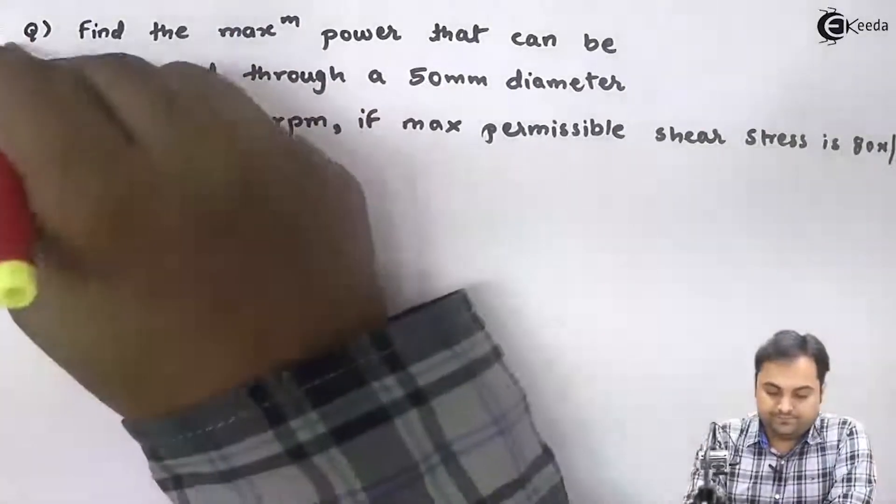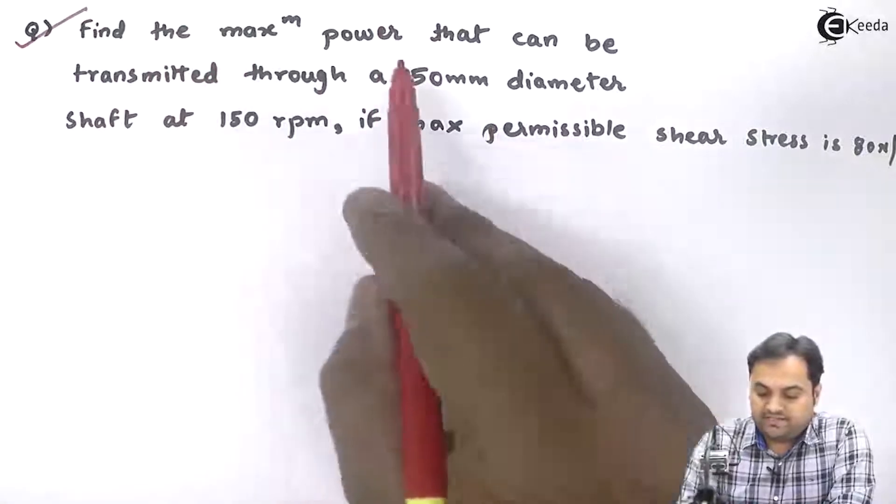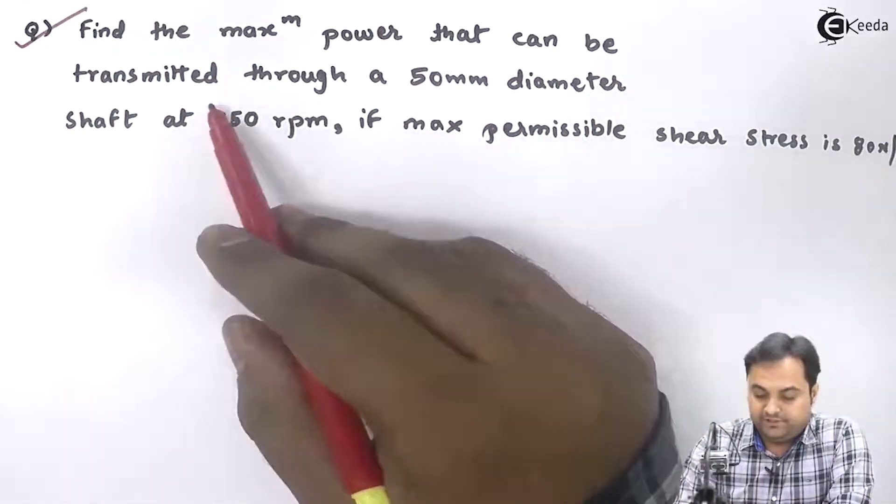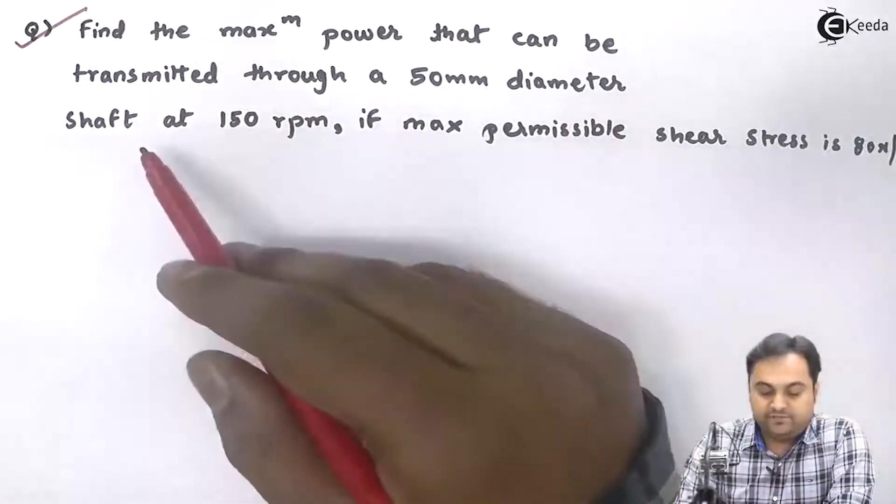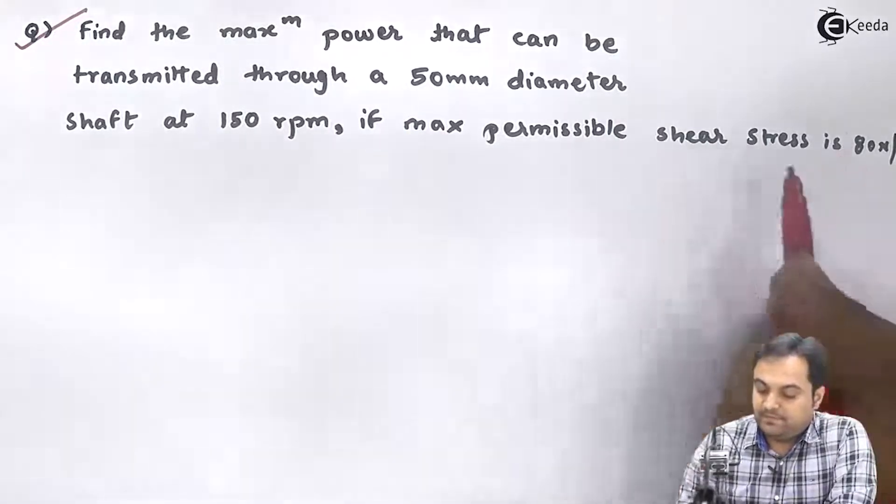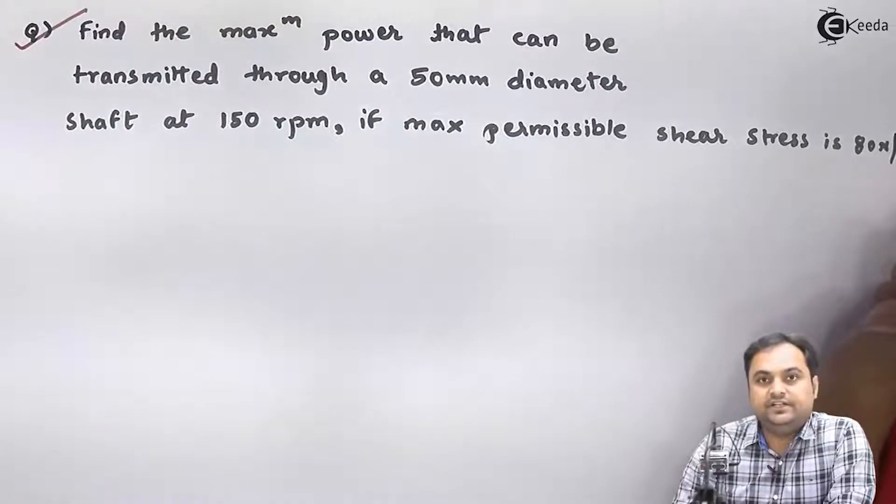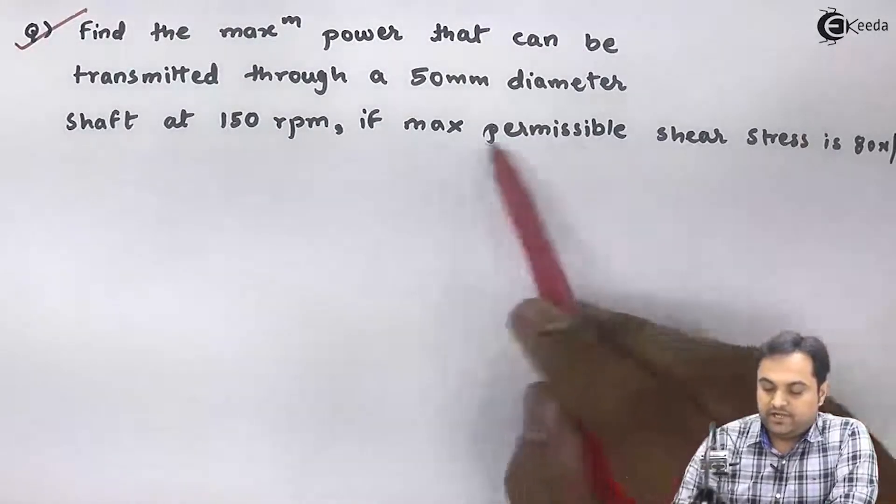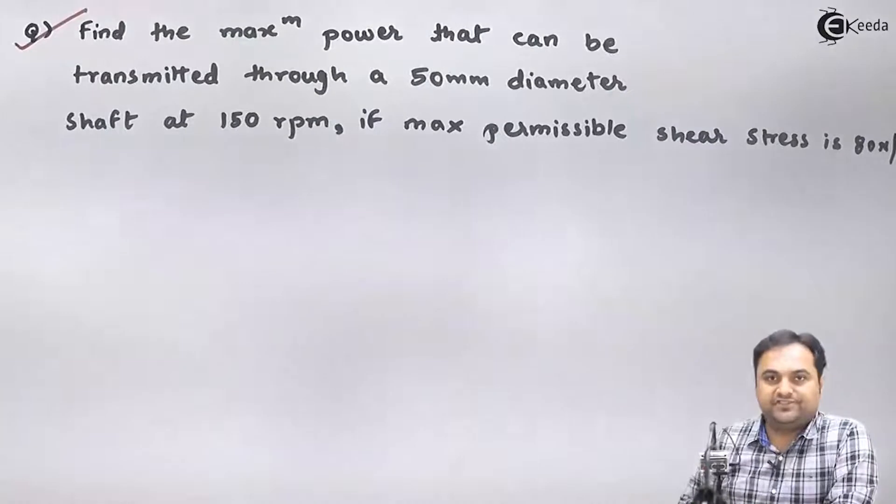Let us take the next question. Find the maximum power that can be transmitted through a 50 mm diameter shaft at 150 rpm if maximum permissible shear stress is 80 Newton per mm square. Let us try to write the data first.